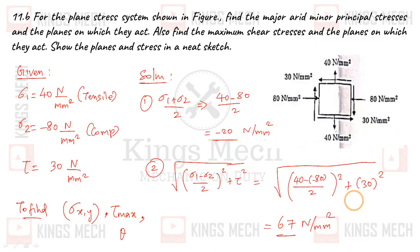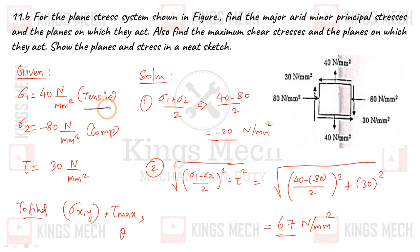This is the given data. Sigma 1 is equal to 40 Newton per mm square, tensile — this is positive. Sigma 2 is 80 Newton per mm square, compressive — this is negative.